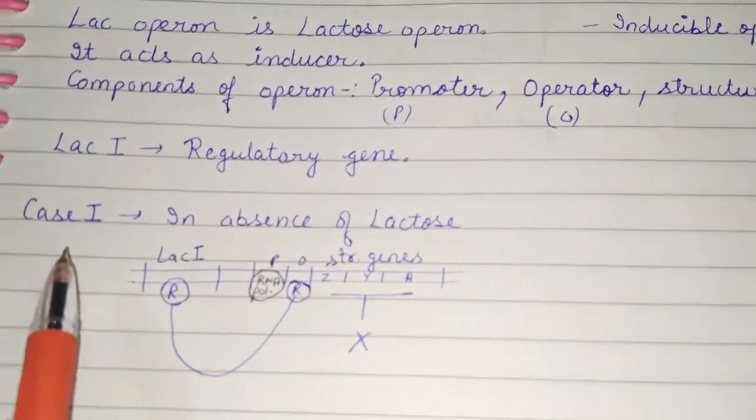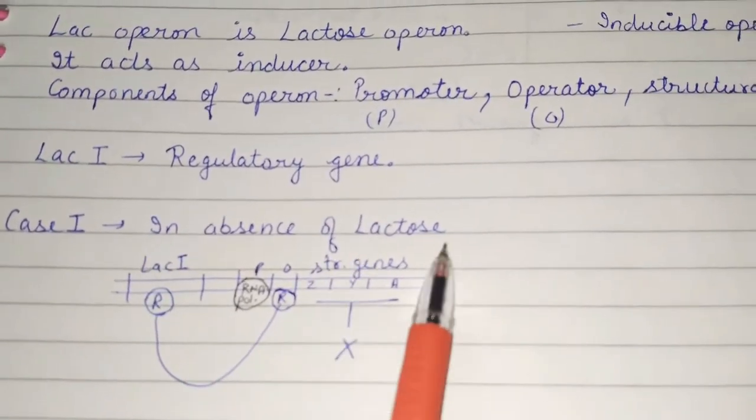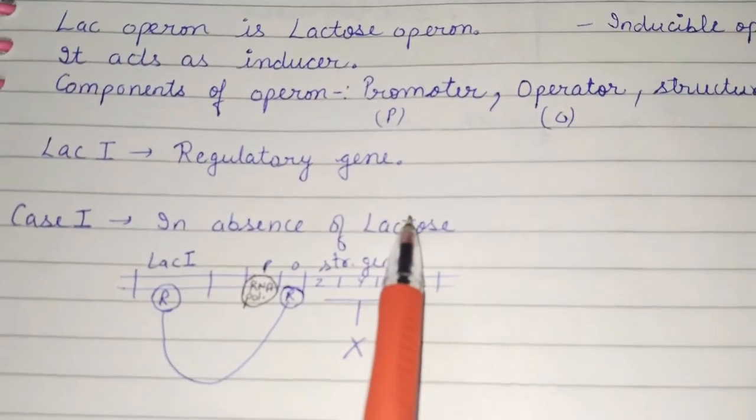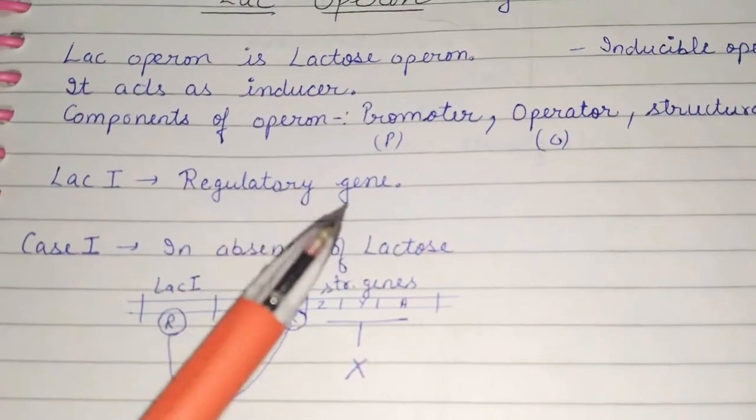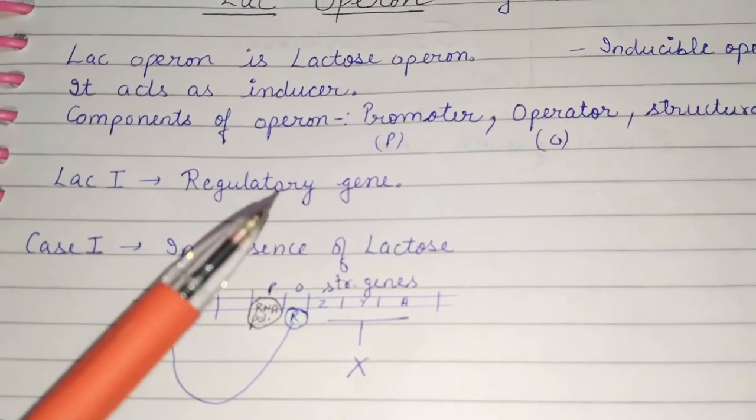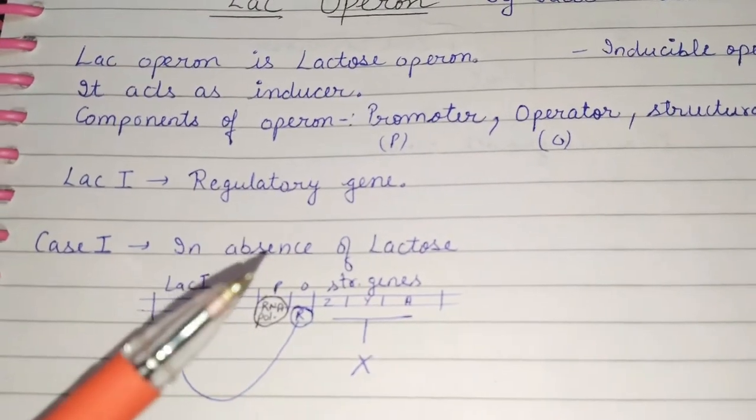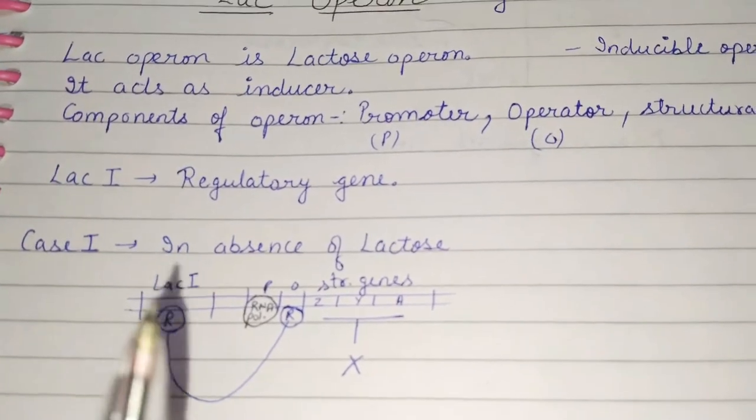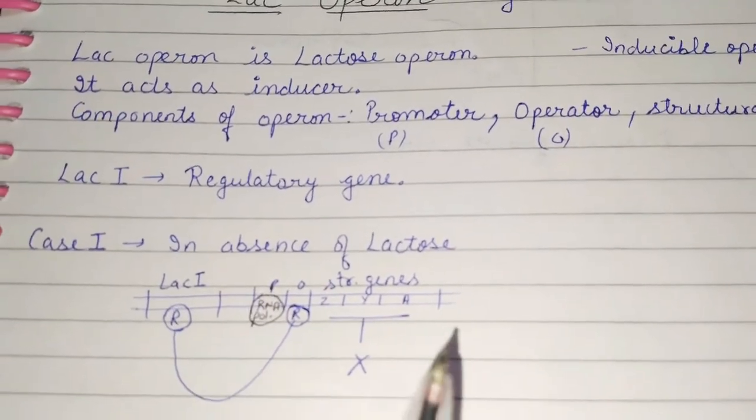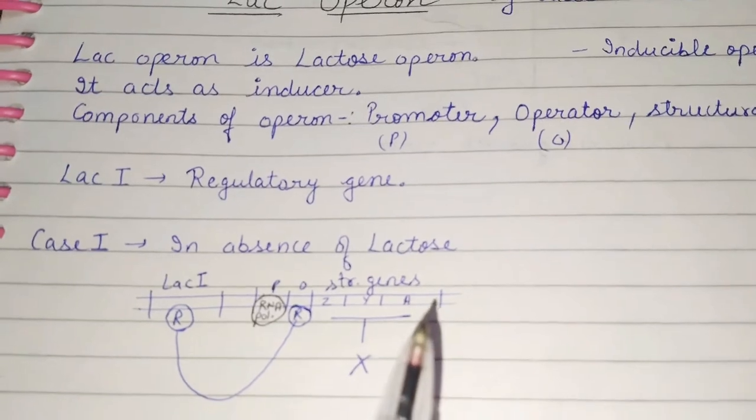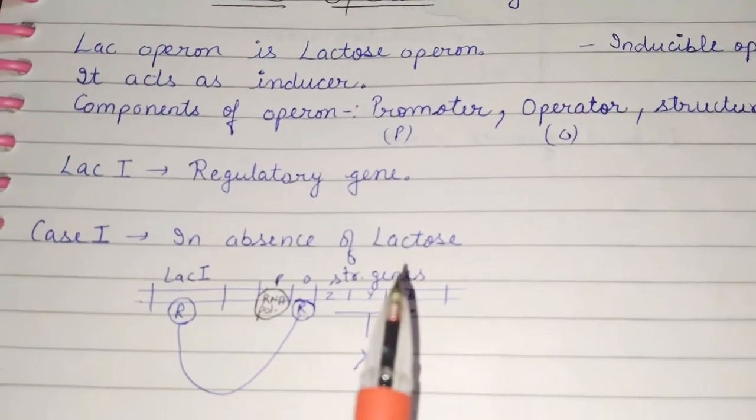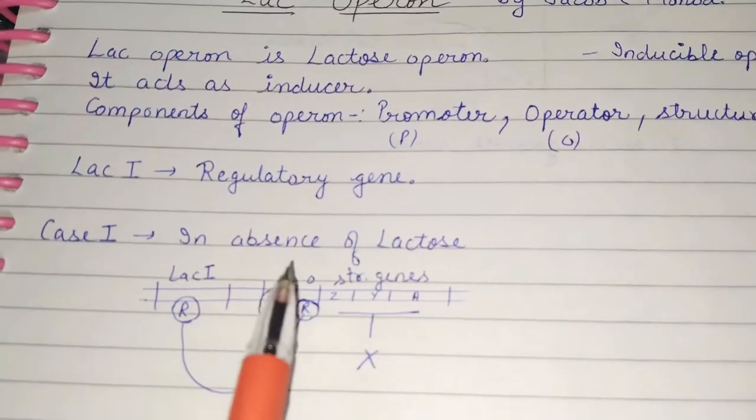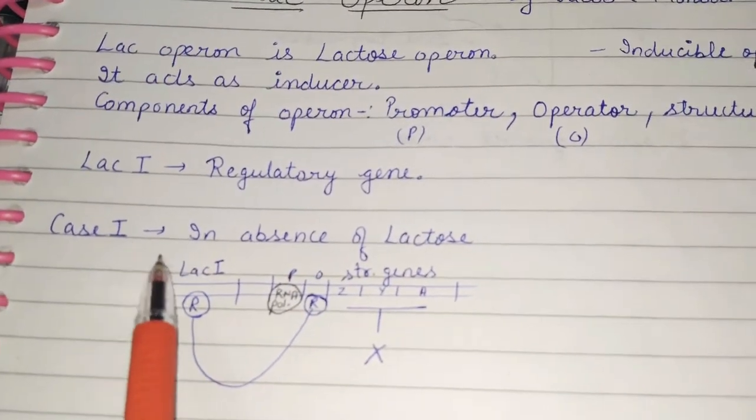First case, in absence of lactose. Before that, I want to tell you what is the need of lactose in our cell or in bacterial cell or E. coli cell. Lactose is a disaccharide. When it dissociates, it gives glucose and galactose. And we know that our energy source is glucose. So, it is the main purpose of it.